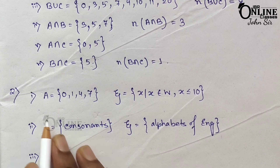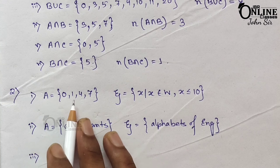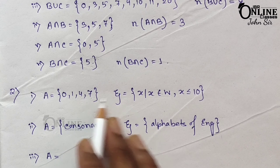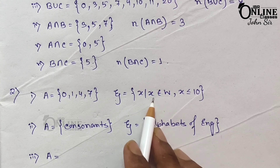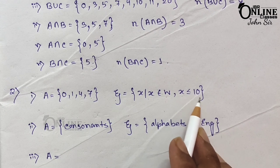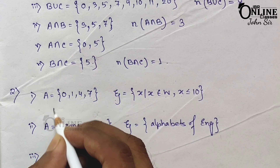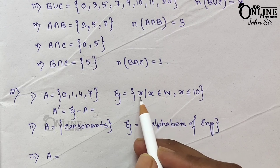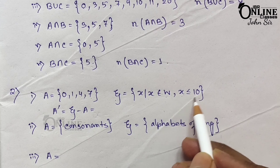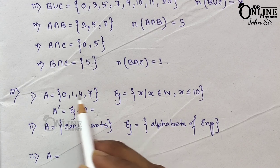Now sum number 2. The given set A equals {0, 1, 4, 7} and Xi — the universal set — equals {x such that x belongs to W and x less than or equal to 10}. You have to find out A dash, or A complement. Always remember: A complement means Xi minus A. The elements of Xi are from 0 to 10.